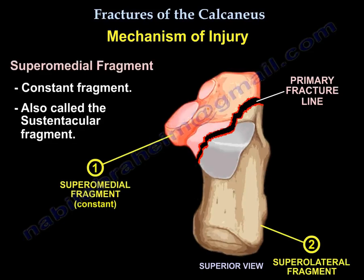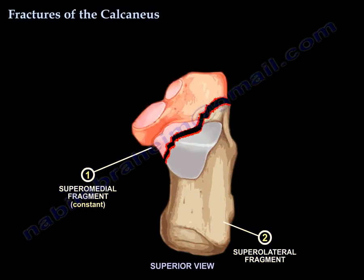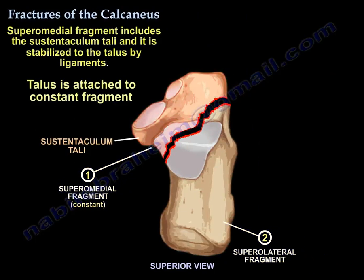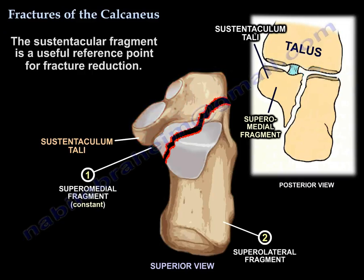The two fragments are the superomedial fragment — the constant fragment, also called the sustentacular fragment — and the superolateral fragment, or the tuberosity fragment. The superomedial fragment includes the sustentaculum tali and is stabilized to the talus by ligaments, so the talus remains attached to the constant fragment. The sustentacular fragment is a useful reference point for fracture reduction.